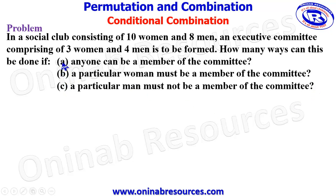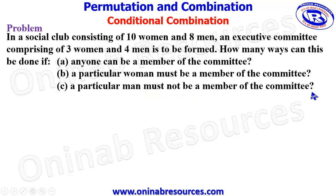For A, B, and C, you will see that A does not have any condition attached to it. So out of the 10 women, all of them are eligible to be a member of the committee, as well as out of the 8 men, all of them are eligible. But for B, a particular woman must be a member of the committee — that is a conditional combination — as well as C, where a particular man must not be a member of the committee. It is also a conditional combination.